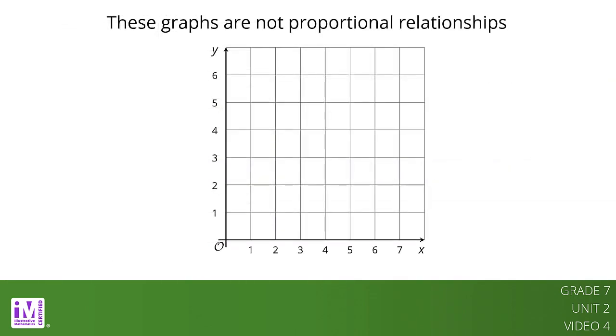Here are some graphs that do not represent proportional relationships. In this graph, the points do not lie on a line. In this graph, there is a line, but it doesn't go through the origin.